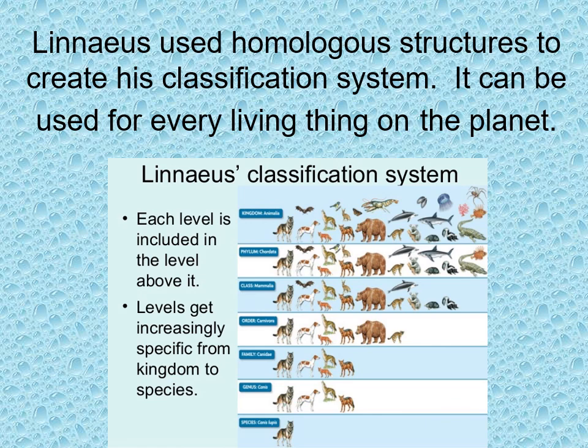The second classification is Chordata, which means we have a spinal cord, like the wolf. The third is class, and that's Mammalia or Mammal. We are mammals. We are warm-blooded. We have hair. We give live birth.